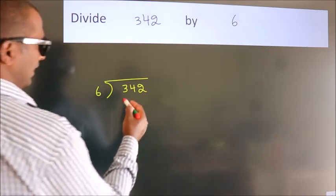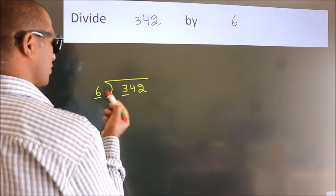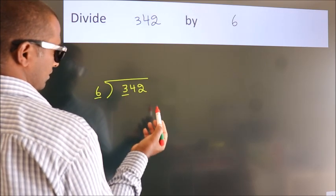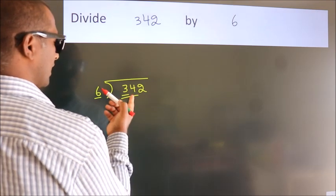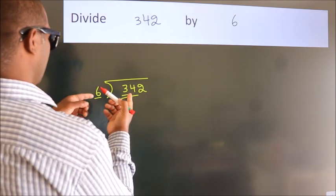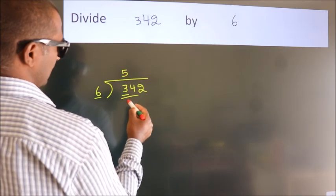Next, here we have 3, here 6. 3 is smaller than 6, so we should take 2 numbers: 34. A number close to 34 in 6 table is 6 times 5, 30.